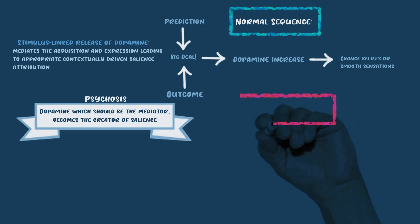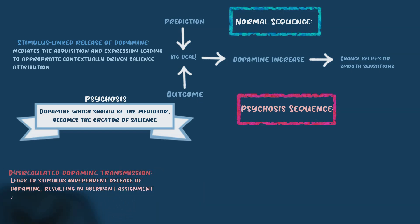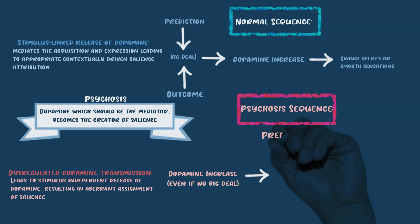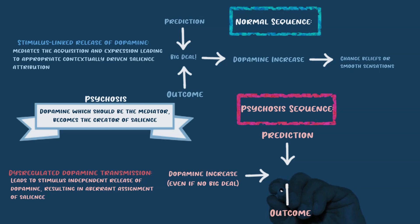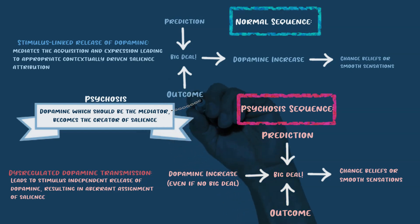In psychosis, dopamine is now the creator of salience. A psychotic individual has dysregulated dopamine transmission, which leads to stimulus-independent release of dopamine. This means things that shouldn't be a big deal are now incorrectly assigned salience. The psychotic sequence is: dopamine increases for no contextually relevant reason, and the brain interprets that increase as 'this is a big deal.' The dopamine aberration takes over normal contextually-driven salience, leading to inappropriate assignment of salience to external objects and internal representations.